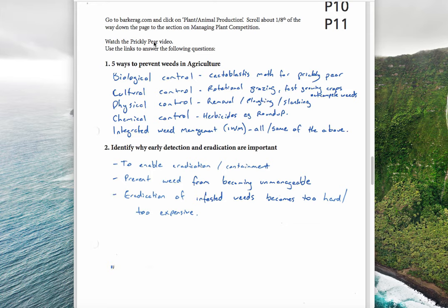An example of biological control: the prickly pear video on the Barker AG website. Prickly pear was introduced into Australia from South America about a hundred years ago and became a significant weed — a tough, almost cactus-like plant with no natural predators in Australia. The biological control is the cactoblastus moth, also introduced from South America, which eats the prickly pear and causes it to die, though it is slow. Cultural control could include rotational grazing and fast-growing crops that out-compete weeds. Physical control includes removing, ploughing, or slashing weeds. Chemical control uses herbicides such as Roundup. Integrated weed management involves using all of these.